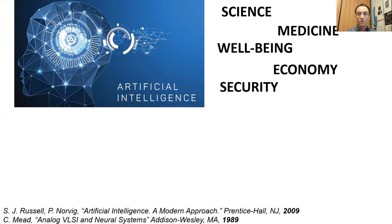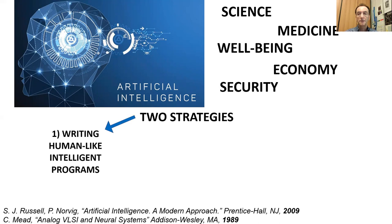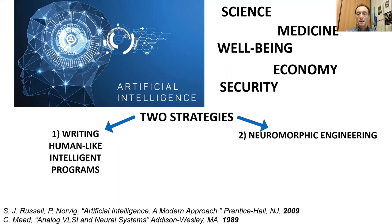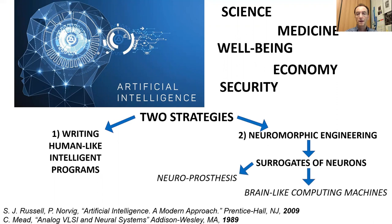Artificial intelligence is revolutionizing our lives and societies. It's used in basic and applied science, medicine, well-being, economy, and security. There are two strategies to develop artificial intelligence. One strategy consists in writing human-like intelligent programs running in computers or special-purpose hardware. The other is through neuromorphic engineering, where surrogates of neurons are implemented through non-biological systems, either for neuroprosthesis or to design very light computing machines.